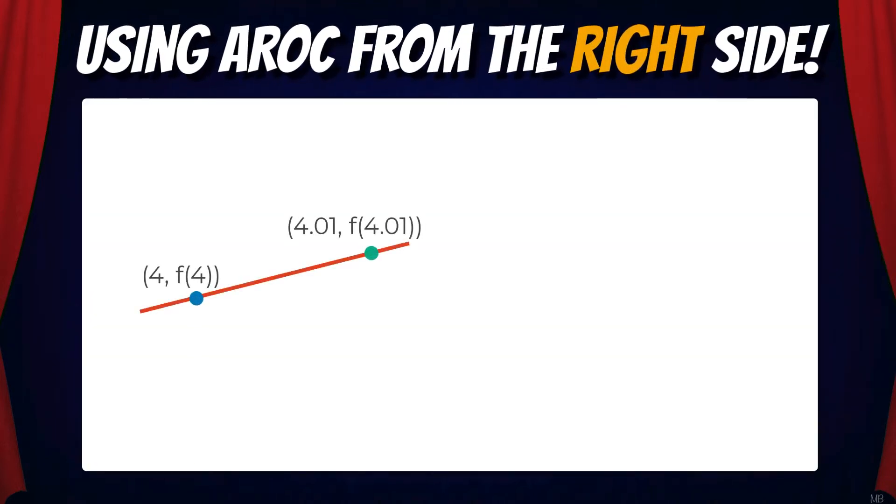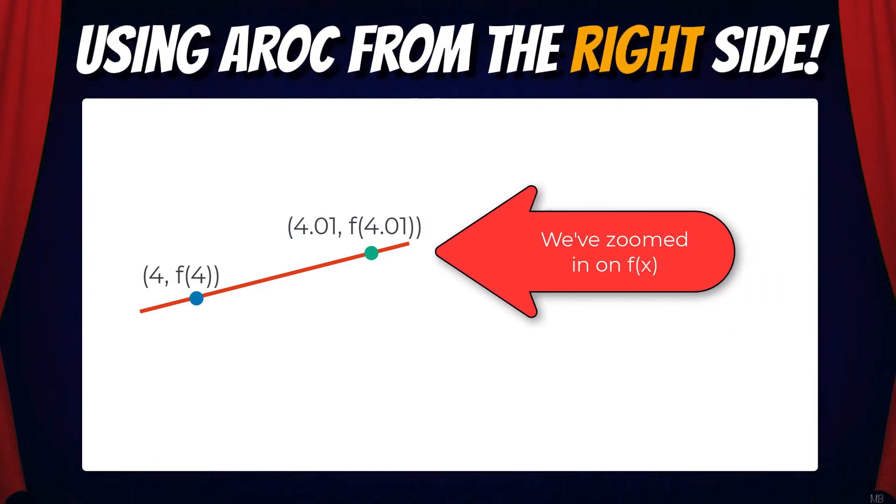Going back to our function y equals radical x, we're going to pick a point extremely close to x equals 4. Here I've chosen 4.01 and note that's on the right side of x equals 4. Also note that we're extremely zoomed in, so it almost appears that the function is a straight line.